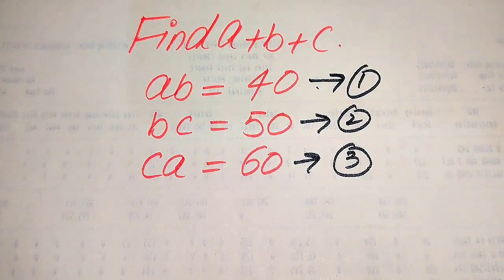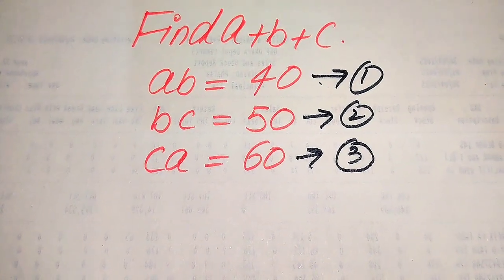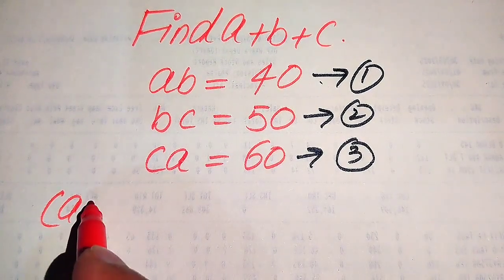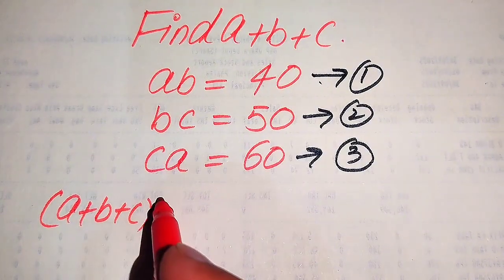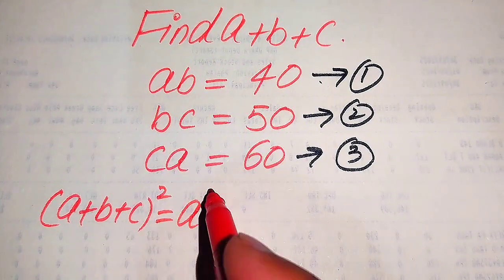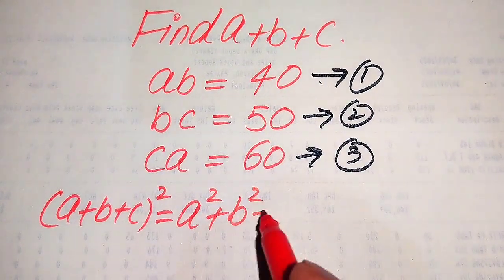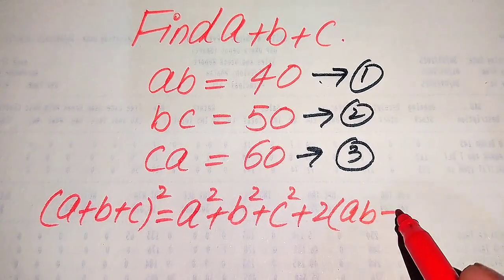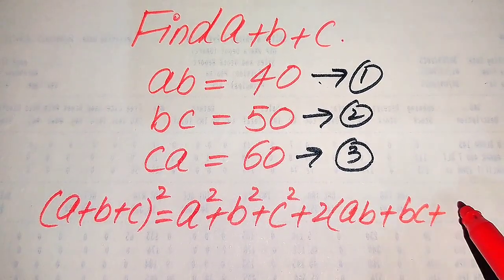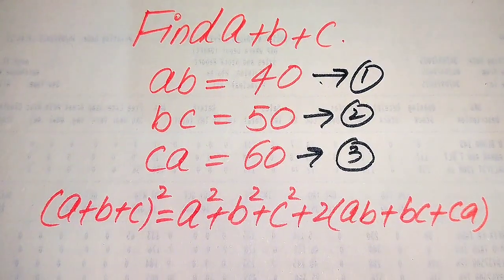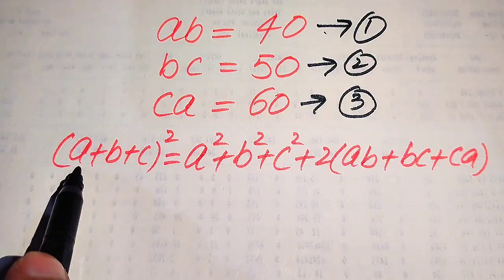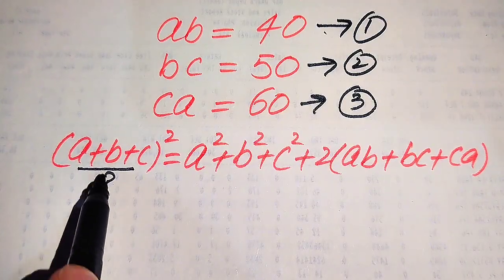We just find the values of A plus B plus C from these 3 equations. Here we use a nice algebraic formula: if we have (A plus B plus C) whole square, it equals A square plus B square plus C square plus 2 times of AB plus BC plus CA. We use this nice algebraic formula to find the sum of A plus B plus C.